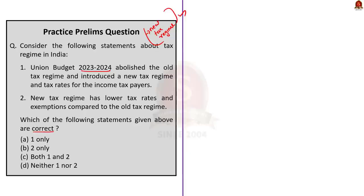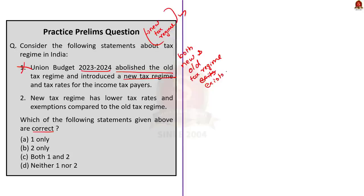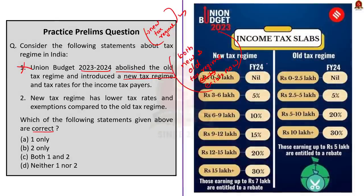Statement 1 says the Union Budget 2023-24 abolished the old tax regime and introduced a new tax regime and tax rates for income taxpayers. This statement is incorrect because the Union Budget 2023-24 did not abolish the old tax regime. It just introduced some changes to the new tax regime to make it more attractive. In India, there are two tax regimes — old and new — with different tax rates. The change is that persons earning up to 7 lakhs can claim a rebate under the new tax regime, while the rebate limit remains at 5 lakhs under the old regime. Both regimes are still present and operational.